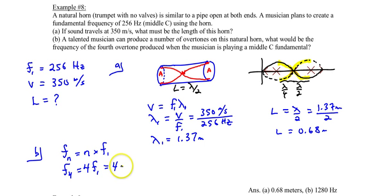So we take four and multiply 256 hertz by that and that gives you the fourth harmonic which is 1,280 hertz. And that's it for this example.